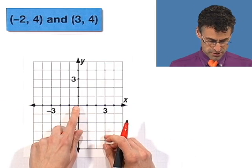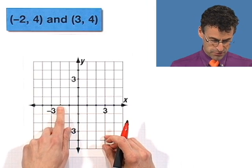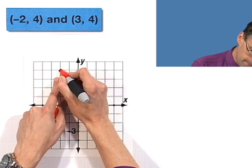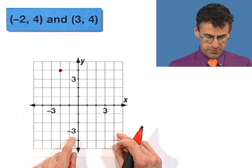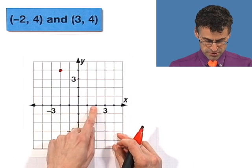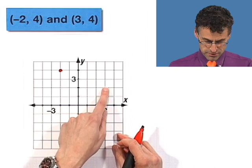Negative two, four. So, negative one, negative two, four, three, four. So, it goes right up here. And then three comma four. One, two, three, comma four. One, two, three, four.